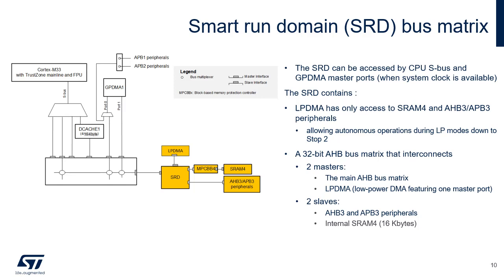Some peripherals support autonomous mode — they remain active while the microcontroller is in low power stop mode. These peripherals generate a kernel clock request and an AHB/APB bus clock request when needed to operate and update their status registers, including in stop mode. If the autonomous peripheral is configured with DMA requests enabled, a data transfer is performed thanks to the AHB/APB clock. The autonomous peripherals mapped on AHB1, AHB2, APB1 and APB2 belong to the CPU domain (CD) and are autonomous in stop 0 and stop 1 only, with the GPDMA and SRAM1, SRAM2, SRAM3, SRAM4, SRAM5 or SRAM6. The main matrix belongs to the CD.